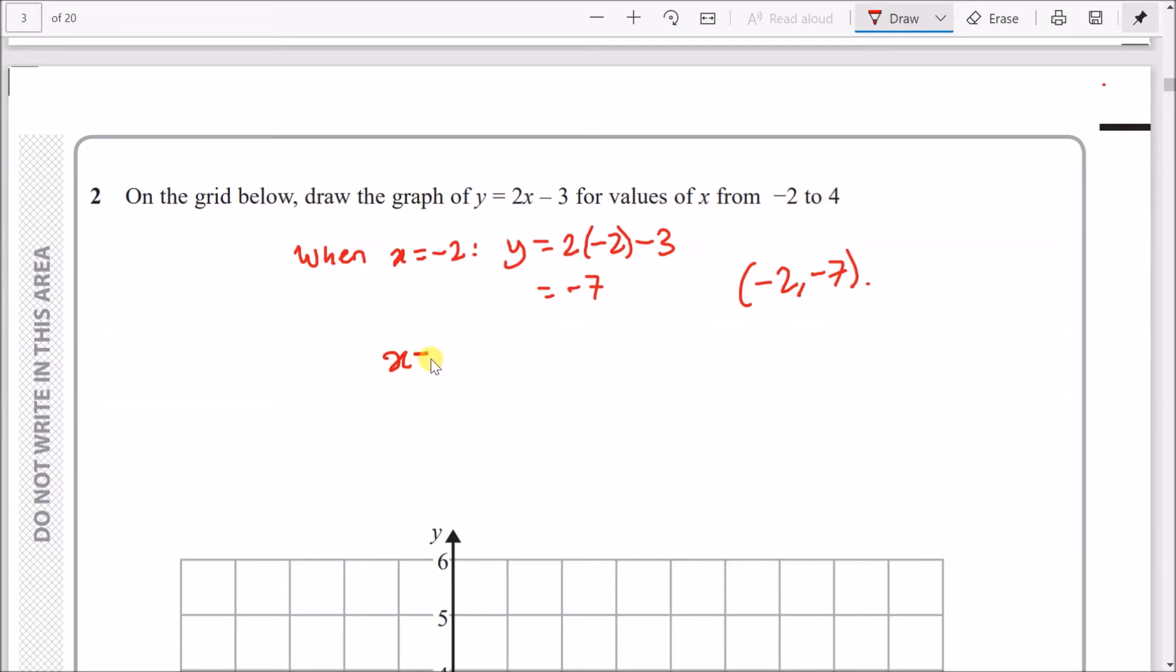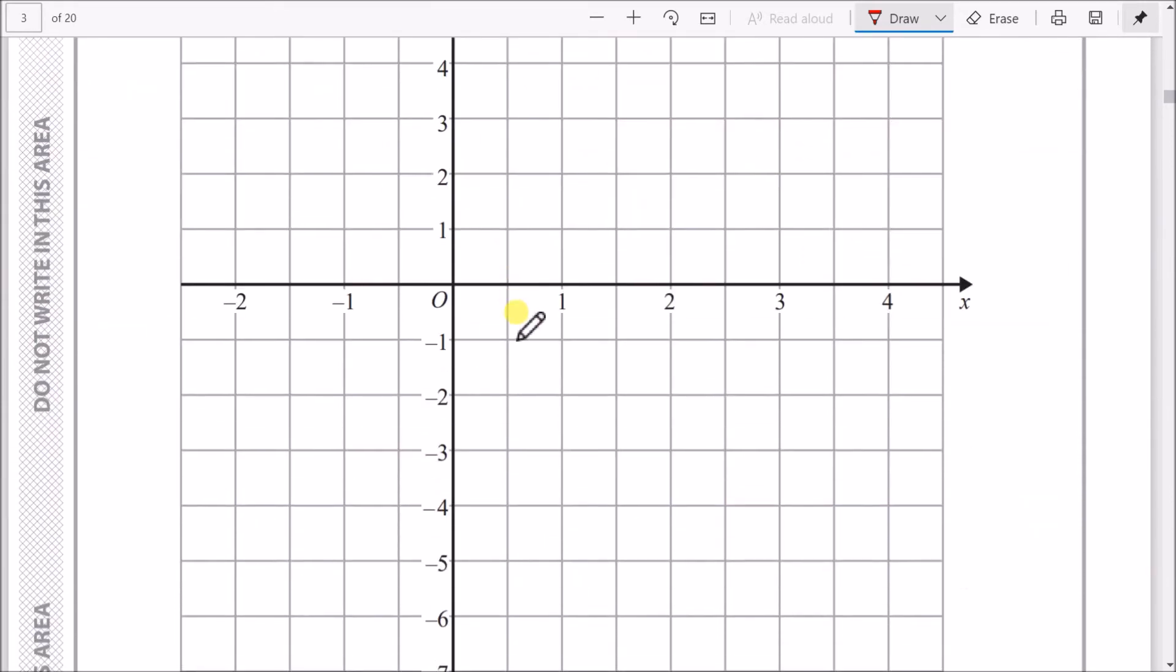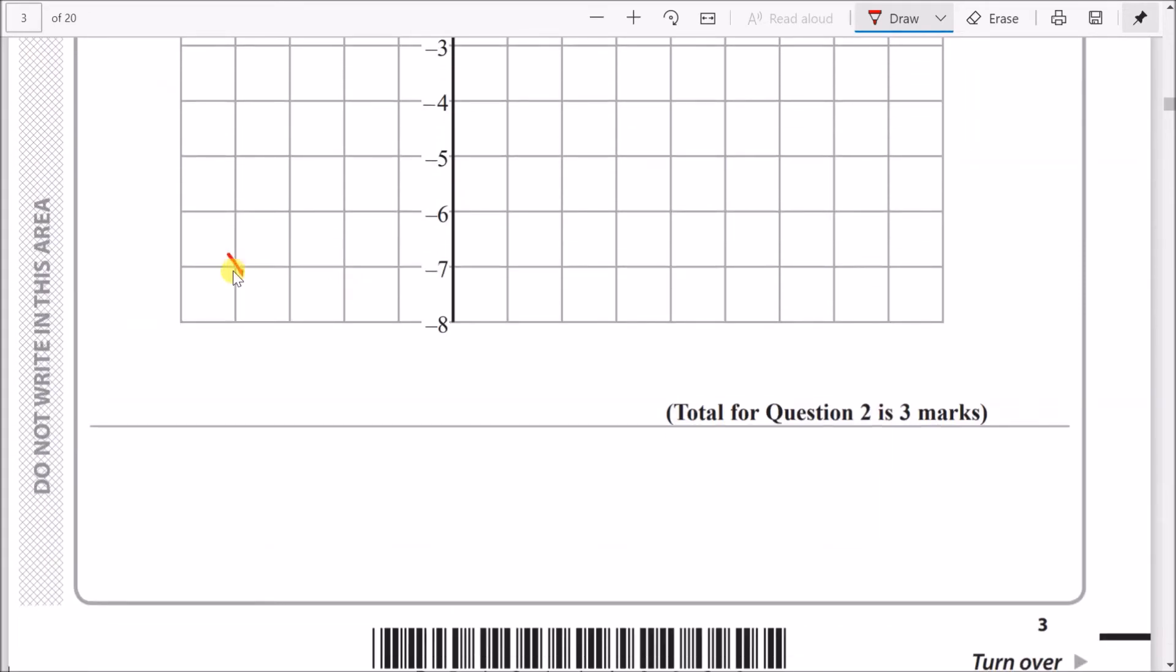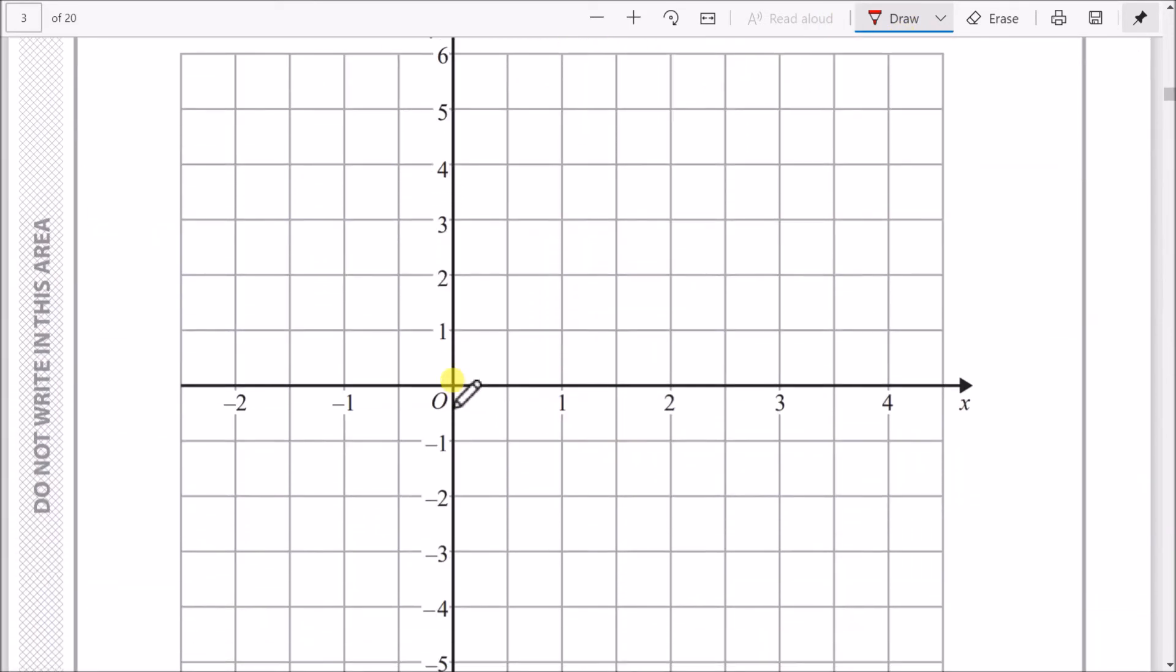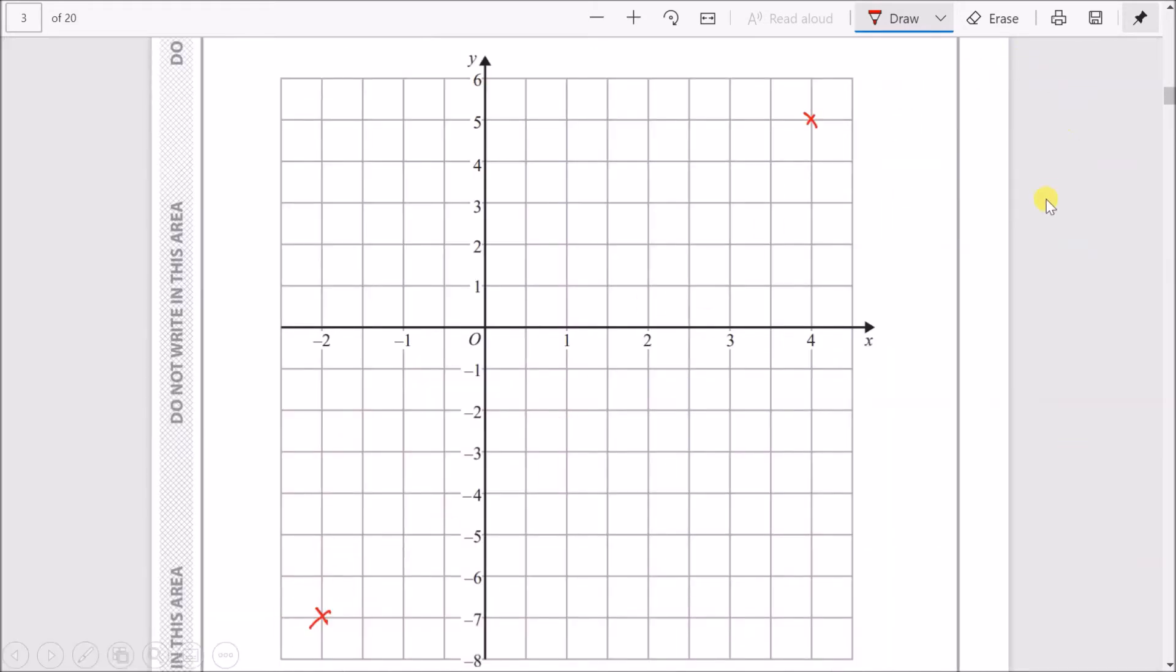Now pick another point—let's say 4. When x equals 4, y equals 2 times 4 take away 3. Putting this in the calculator, 2 times 4 is 8, 8 take away 3 is 5. So the next coordinate is 4 and 5. Plot these in and draw a straight line: minus 2, minus 7 is across and down, and 4, 5 is four across and five up. Drawing a straight line together, you're done.